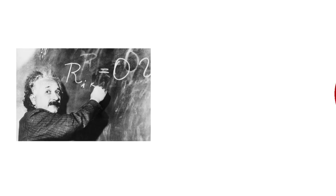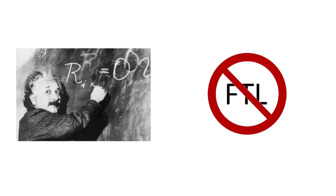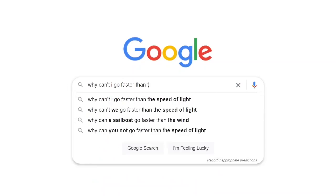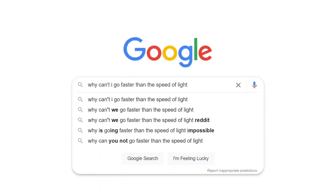Einstein says you can't go faster than the speed of light. If you've ever wondered why that is and maybe tried to Google for an answer, there's a good chance you've come across an explanation like this.